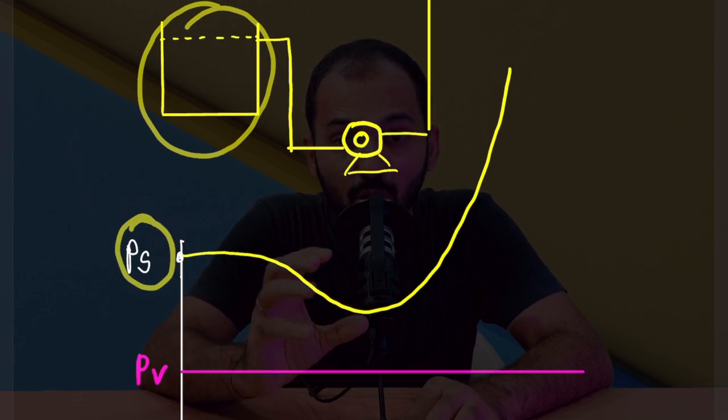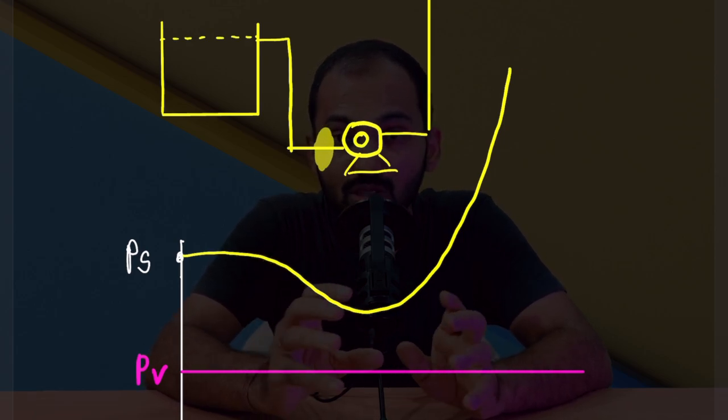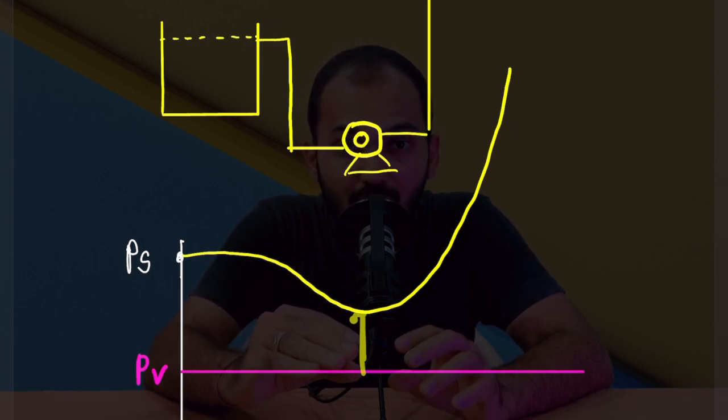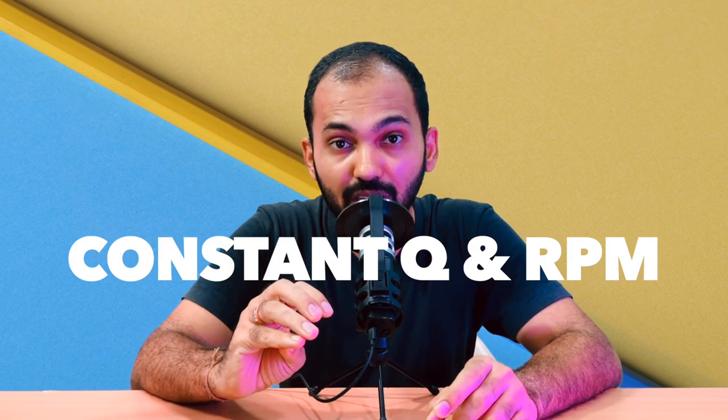From the reservoir to the impeller eye, we measure the suction pressure — the pressure as the fluid enters the pump before the impeller. The difference between suction pressure and vapor pressure, converted to head, is called NPSH available. This calculation is done at a fixed RPM and fixed flow rate. Our NPSH available = (Ps − Pv) / ρg. We need a reference value to compare against, which is given by the pump manufacturer.